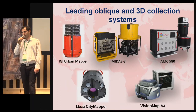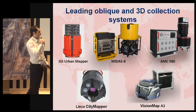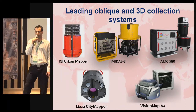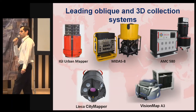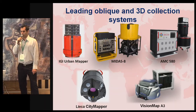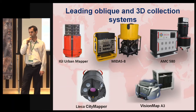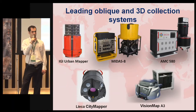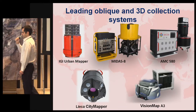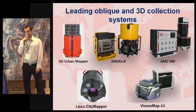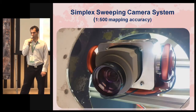Let me talk about our collection system, because it's quite unique. These are some of the leading oblique and 3D collection systems available today — most use 5, 8, or 10 fixed cameras, are very large, quite expensive, and require designated aircraft with a shooting hatch, usually twin-engine planes you can't find anywhere. Our approach was different — we tried a much simpler approach.